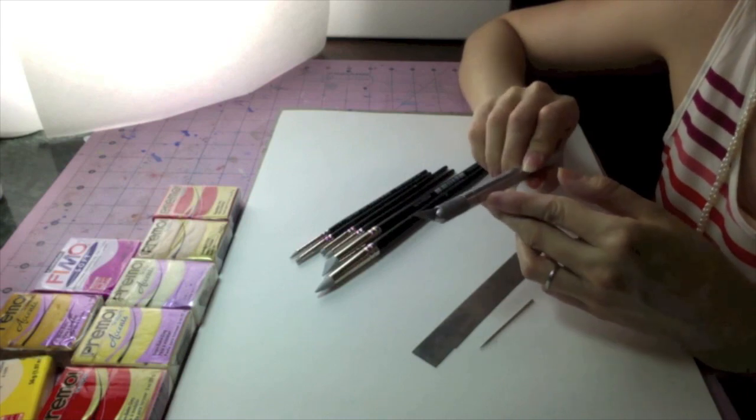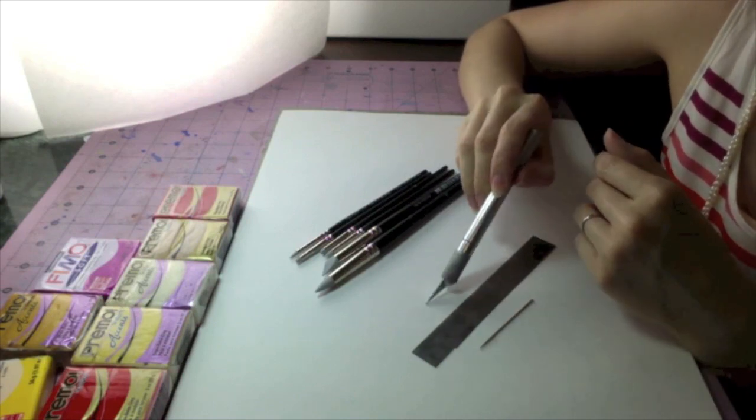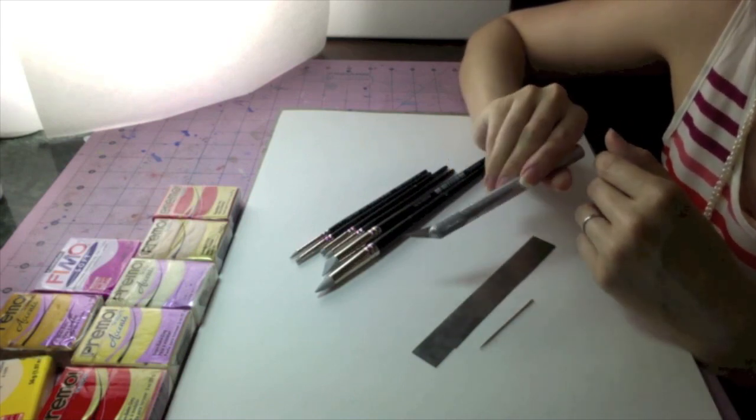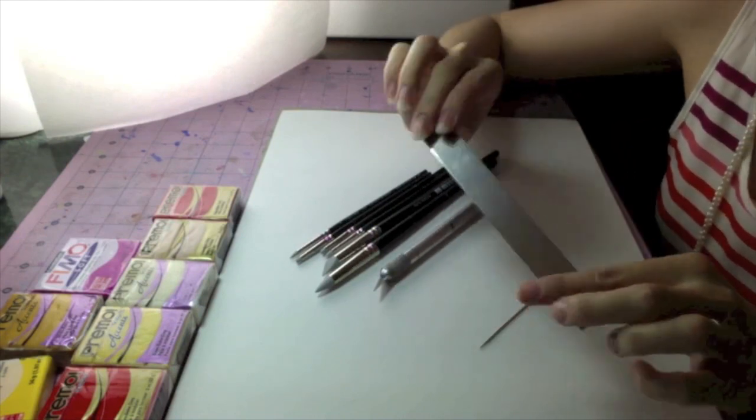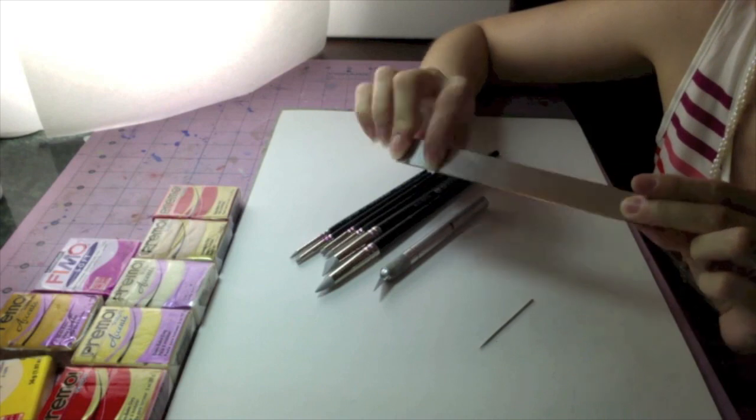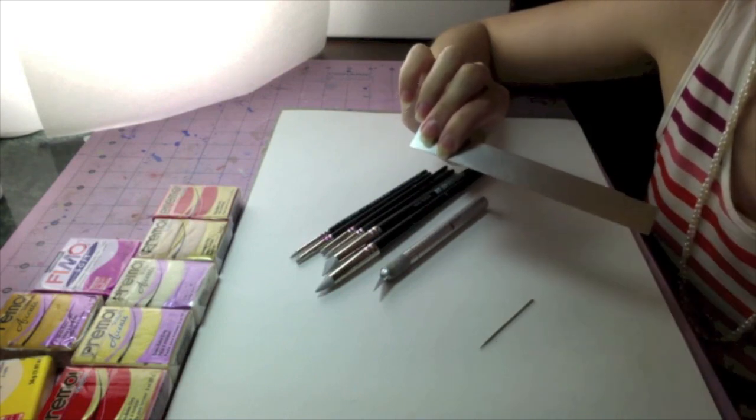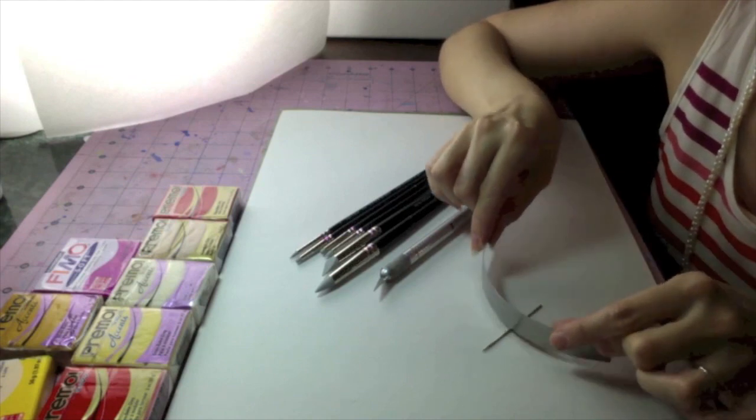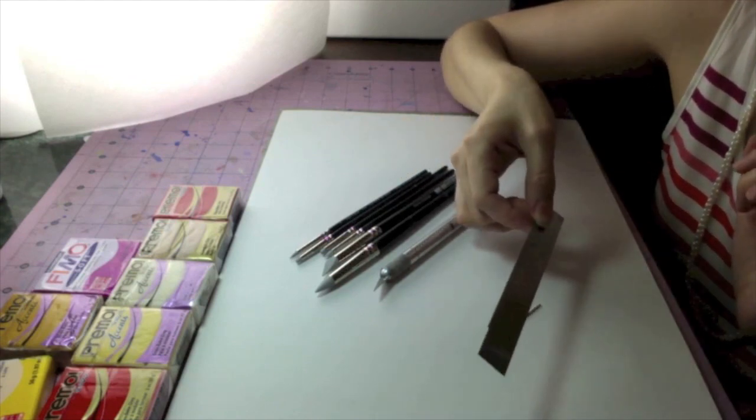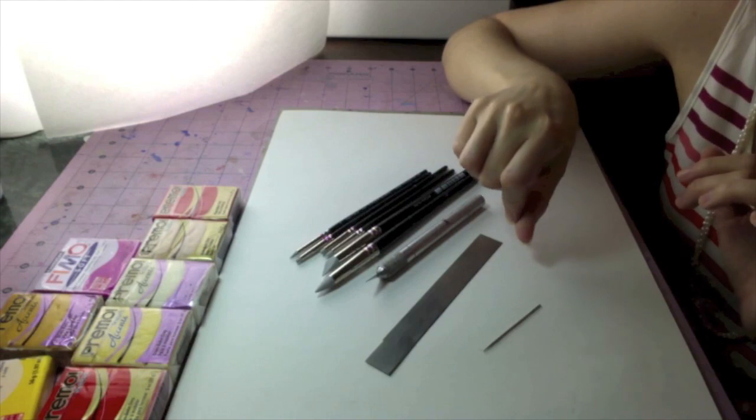An exacto blade is great for making little precision cuts, and I use this for all different kinds of things. The next thing I use is a flexible craft blade. It's really sharp on one end, so always make sure you grab it from the right side. You can flex it around and make some different cuts with it. It's pretty helpful. I think it's called a tissue blade.